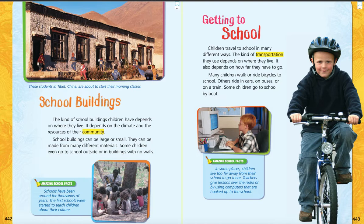How they dress, the foods they eat, the holidays they celebrate, things like that. Here's our next heading at the top of page 443: Getting to School. Children travel to school in many different ways. The kind of transportation they use depends on where they live. It also depends on how far they have to go. Many children walk or ride bicycles to school. Others ride in cars, on buses, or on a train. Some children go to school by boat. That would be interesting.